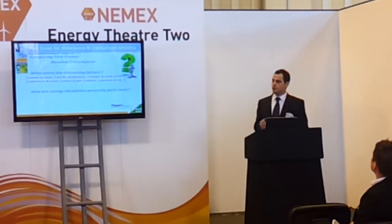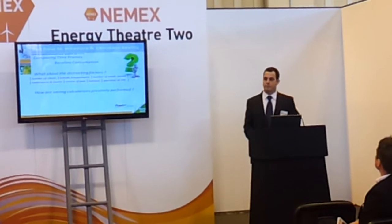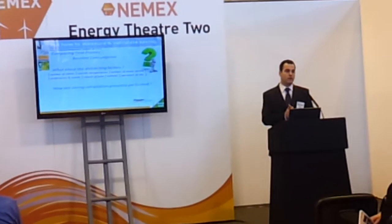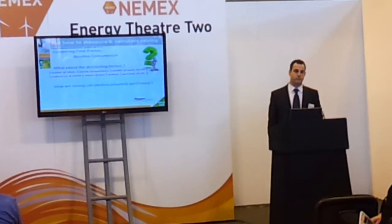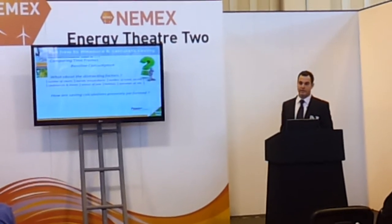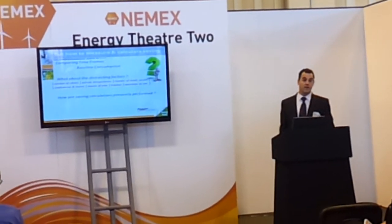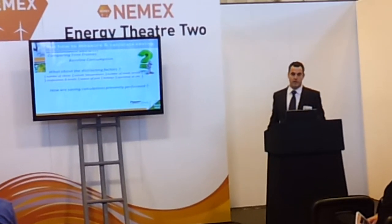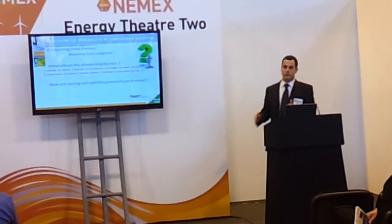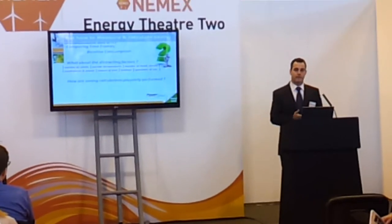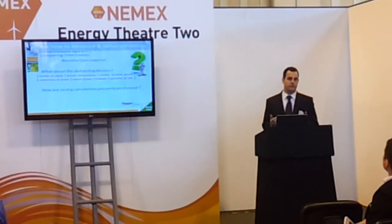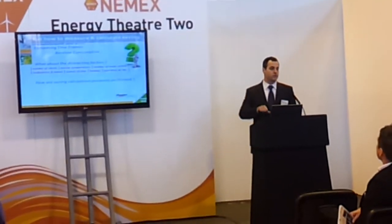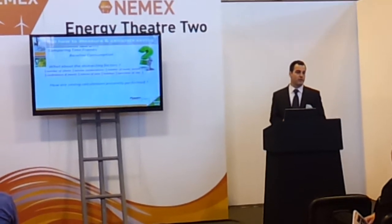That's a huge problem especially when you correlate it into voltage optimization. When you do baseline consumption — a week versus a week — you just extend the effect of all these distracting factors that go into the equation. The statistics becomes quite complicated and less viable and accurate on the whole. And it's obviously impossible to do it on short time increments, because the most accurate way to measure saving is at the point of change. But we cannot do it with most VO systems because you cannot switch sites on and off during operational hours.